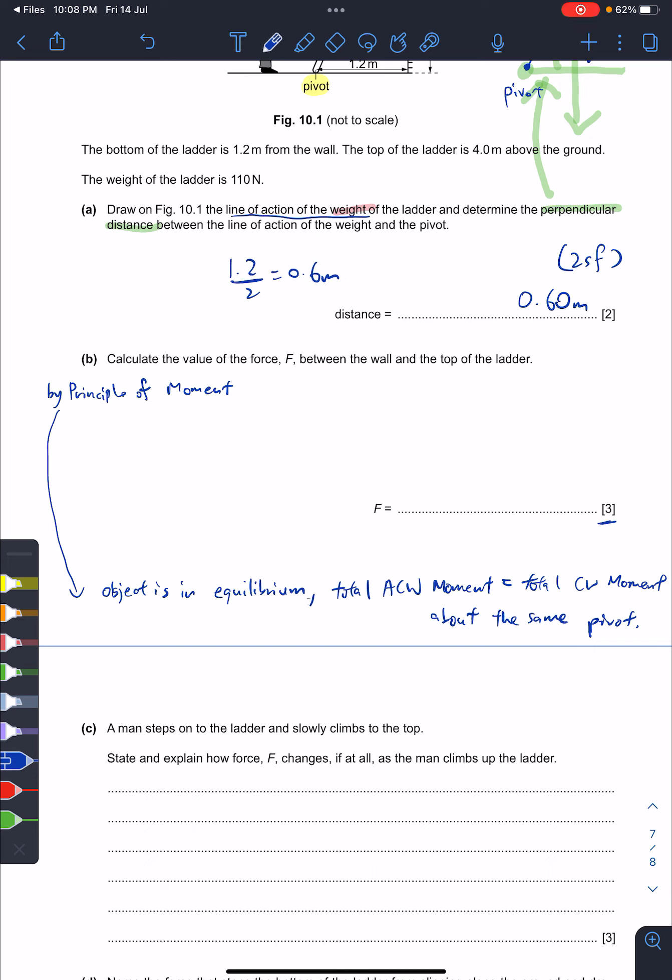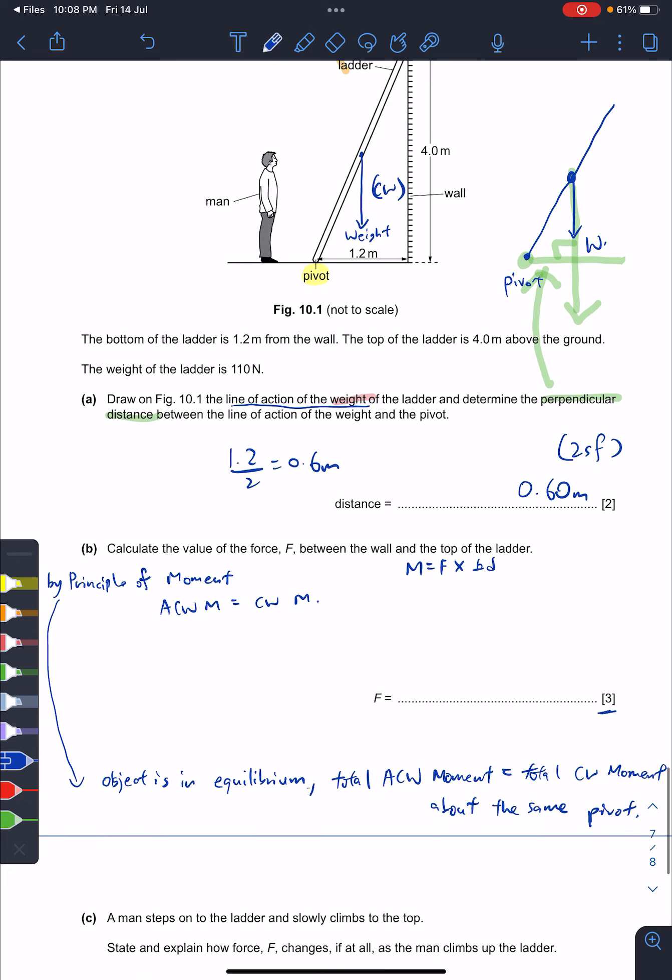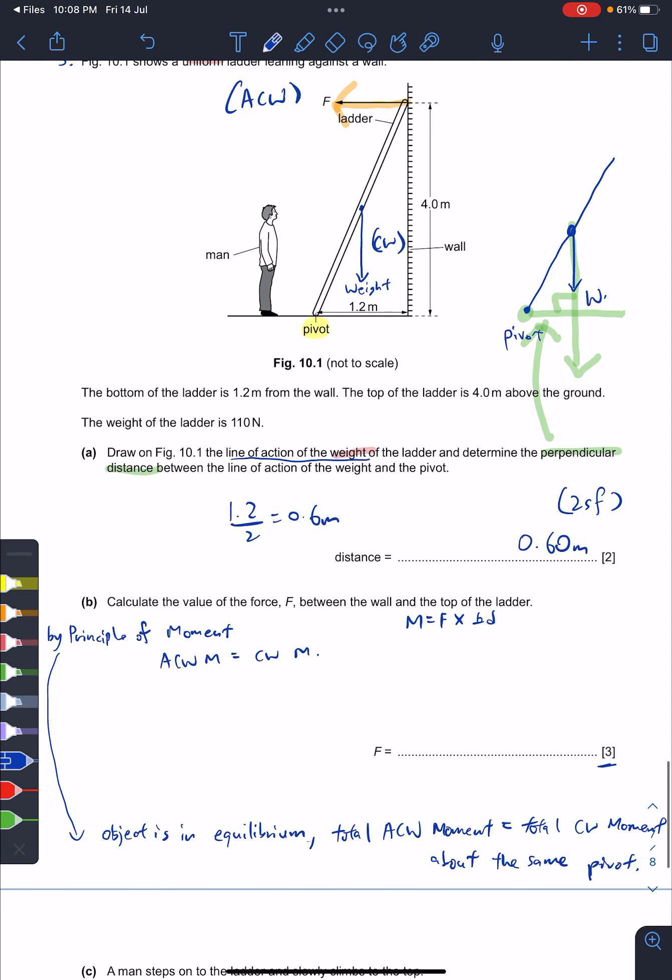Which means it's essentially your ACW moment equals CW moment, right? And you recall moment is force times perpendicular distance. Then you just have to see - let me color code it further. The anti-clockwise is this, and the weight clockwise is purple.